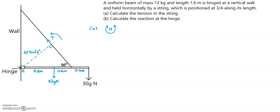So the anticlockwise moment that T produces will be the force, which is T itself, times the perpendicular distance of the string from the hinge, which is 1.2 m sine 50 degrees.